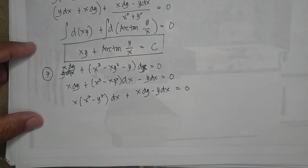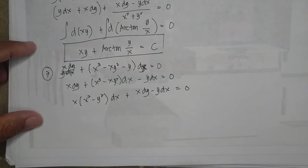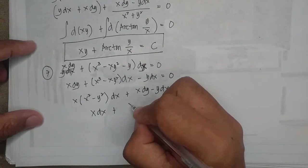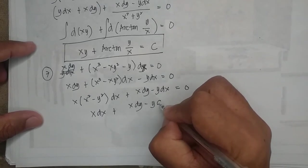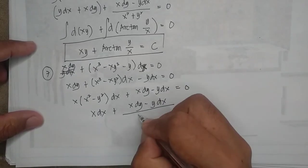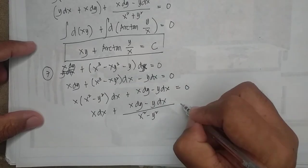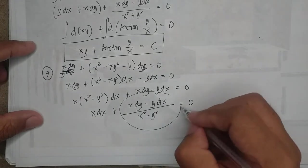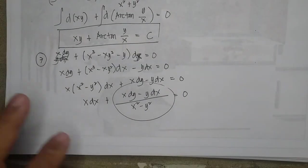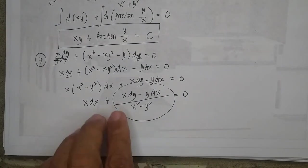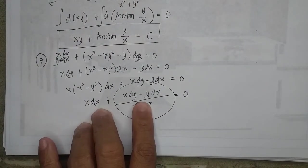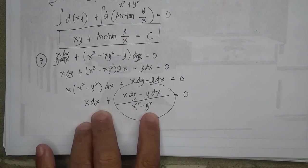So we have x(x² - y²) dx + (x dy minus y dx) = 0. Dividing everything by (x² - y²), we have x dx plus (x dy minus y dx) over (x² - y²) = 0. This falls under formula number five.